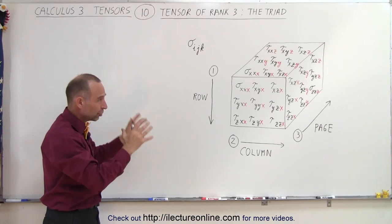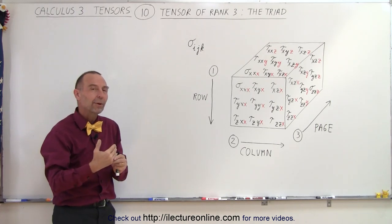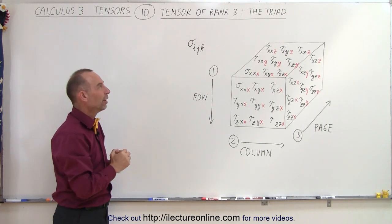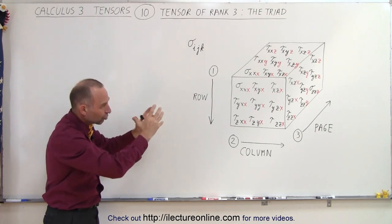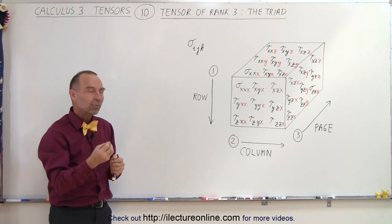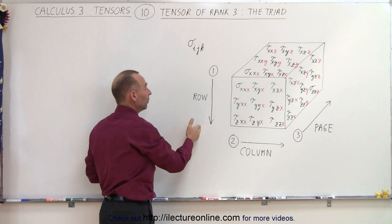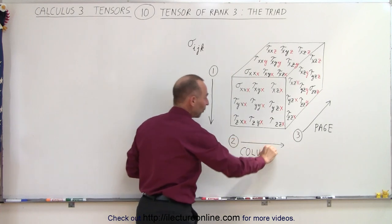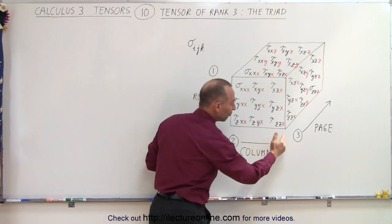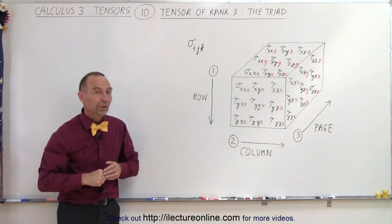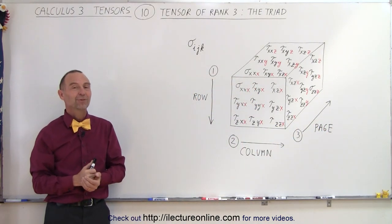Now that alone doesn't give you the total picture, so we're going to try to represent it in various different ways to get a better feel for it: what a triad structure looks like, and how the subscripts are laid out. But again, the best way to remember is top to bottom: row, first subscript. Left to right: column, second subscript. Front to back: page, third subscript. And that's probably the best way to look at it, and that's how it's done.